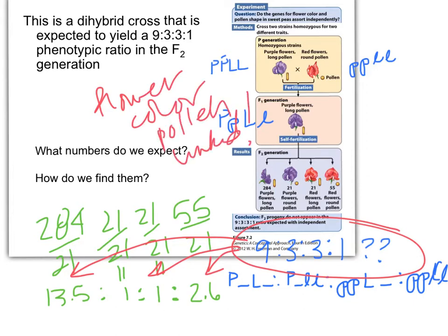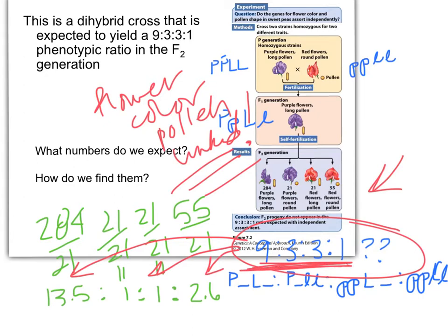Linked. Because when we're actually counting individuals, if you go back to chapter 3, the numbers aren't always exactly 9 to 3 to 3 to 1 — it might be 9.2 to 3.1 to 2.9 to 0.9, but that's close to 9 to 3 to 3 to 1. How do you know if it's linked or not? Linked means close together on the same chromosome; not linked means independently assorting — far apart or on separate chromosomes. If the numbers are pretty close, like 10 to 4 to 2 to 1, we're not able to make that judgment call. We need to use statistics to let the numbers tell us whether it's independent assortment or linkage.